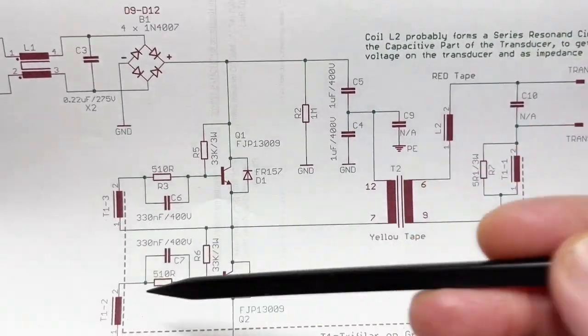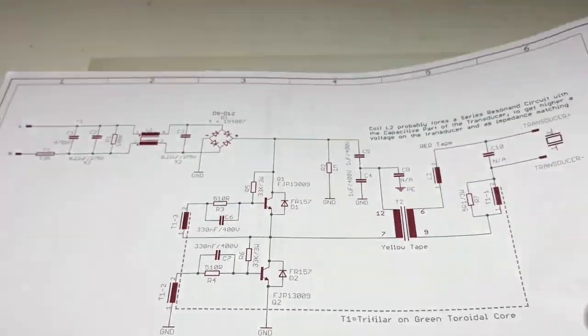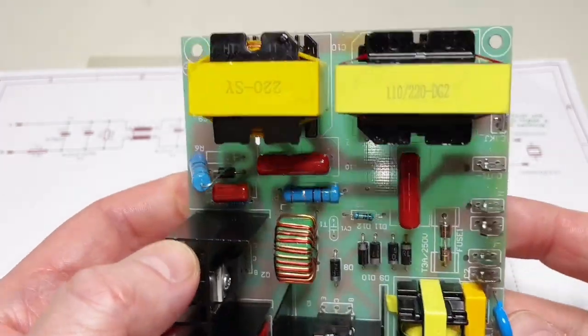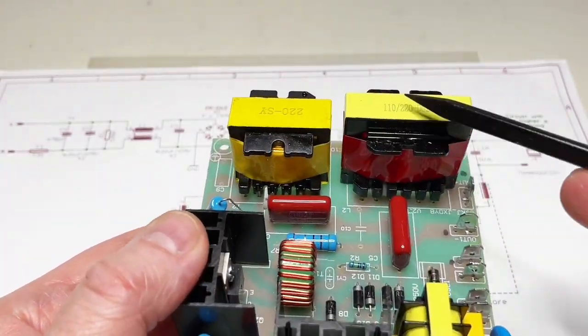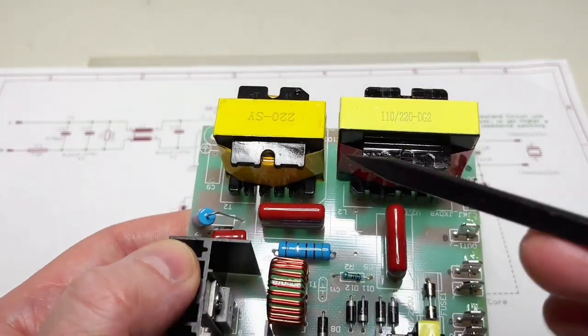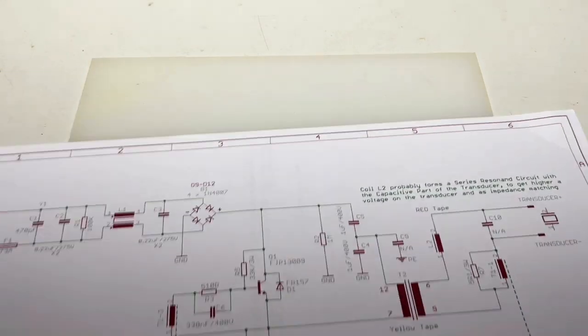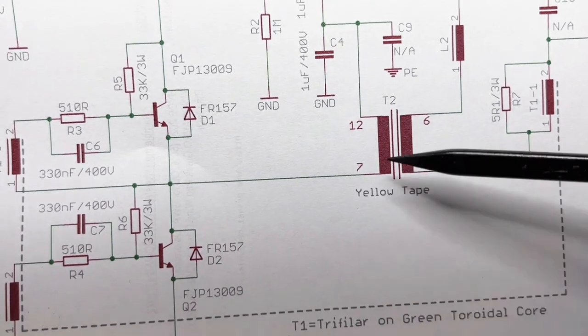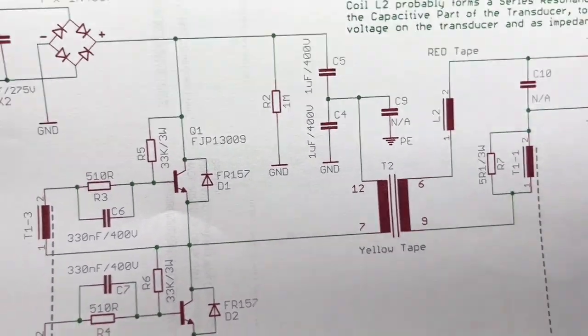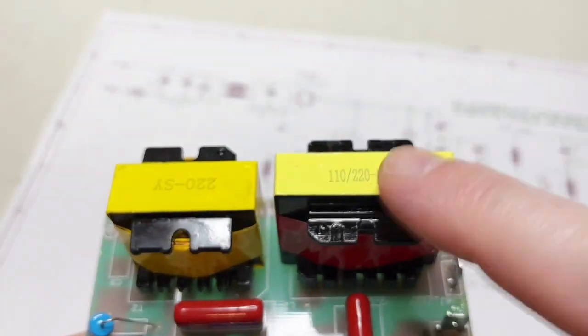When I took it out of the PCB I thought the big one will be the power transformer, but no. This is the power transformer, the yellow one with the yellow tape here. And the one with the red tape is just a coil, a choke.